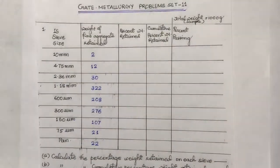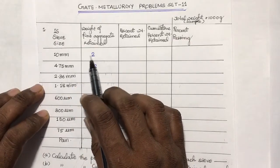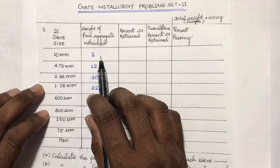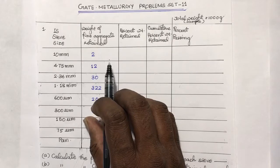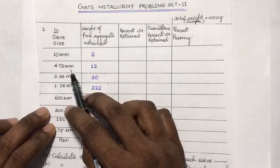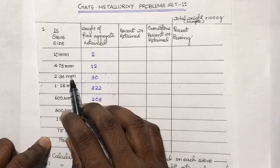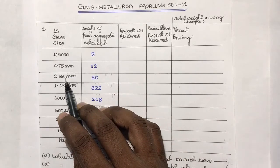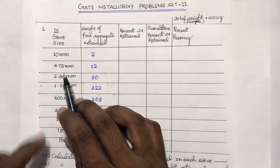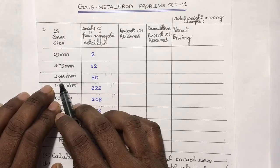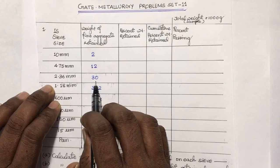In this experiment, the total weight retained on the 10 mm sieve is denoted h2. The weight fraction of the sand passing through 10 mm and retained on 4.75 mm sieve is h12. Similarly, the weight fraction of the aggregate passing through 4.75 mm and retained on 2.36 mm sieve is h30.